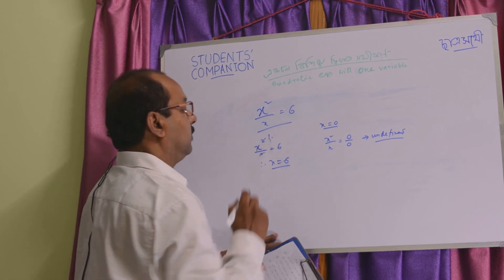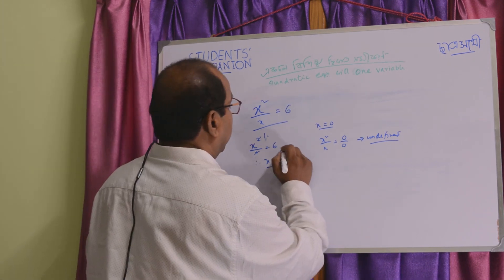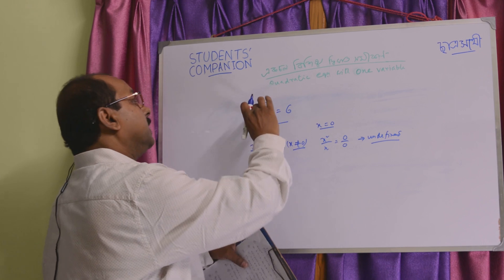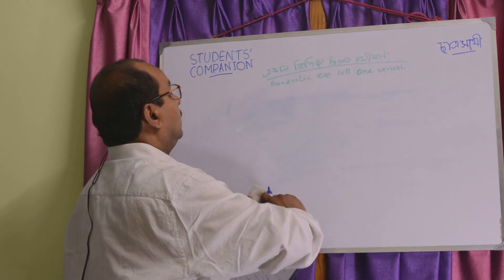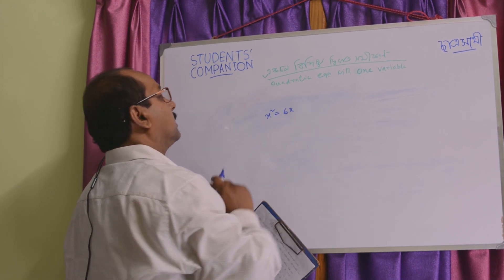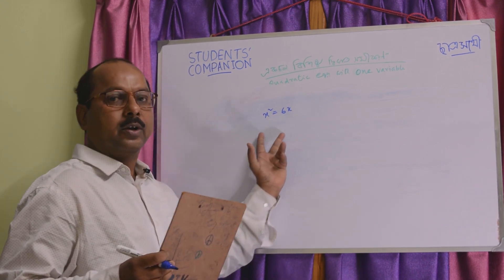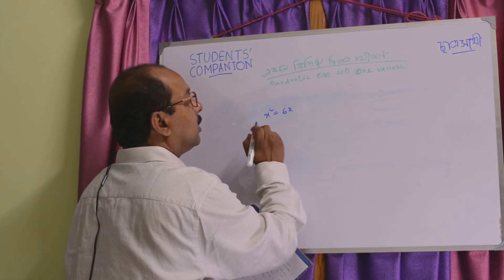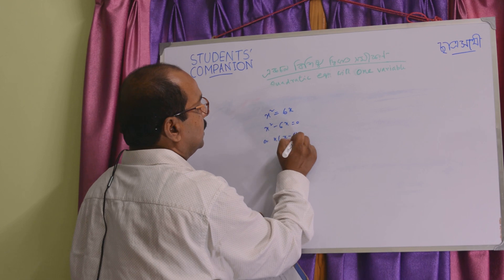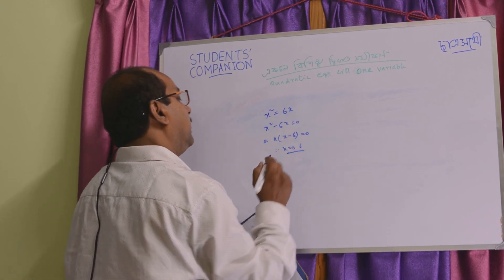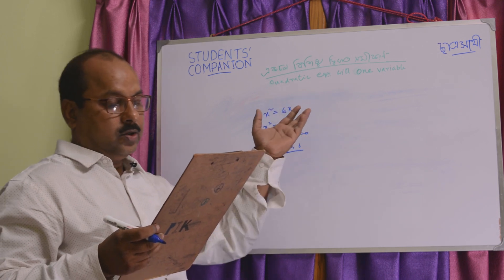x is equal to 6. The question is: x² equals 6x. In order for this to equal 0, we rearrange to x² minus 6x equals 0, then x into (x minus 6) equals 0, giving x equals 0 or x equals 6.